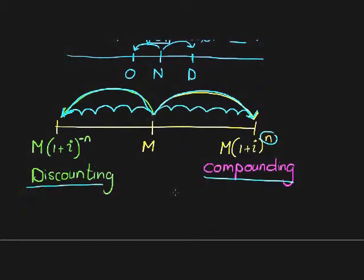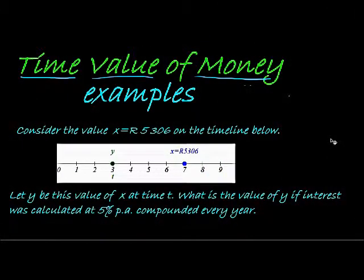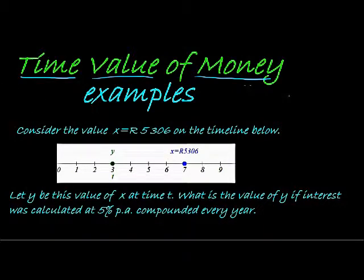When we find a future value we call it compounding, and when we are trying to find a past value we are discounting an amount. Now here's an example: consider the value X = R5,306 on the timeline at year 7. Let Y be the value of X at time T. It's the same value but at a different time period. What is the value of Y if interest was calculated at 5% per annum compounded every year?